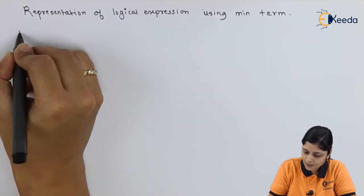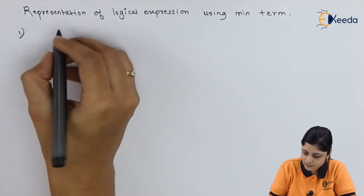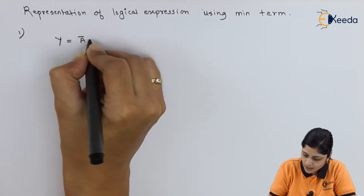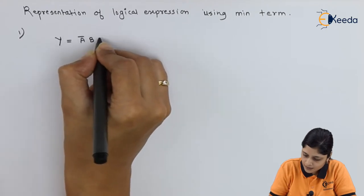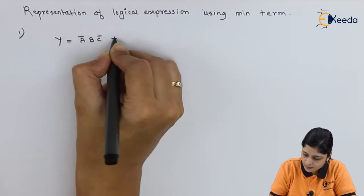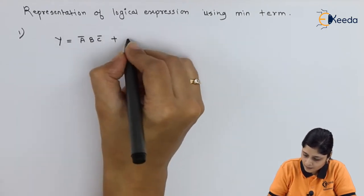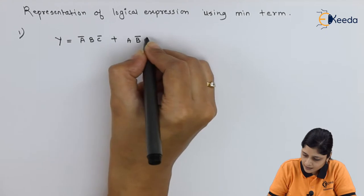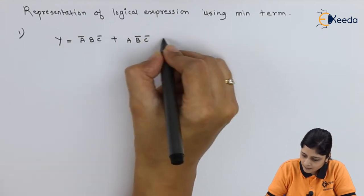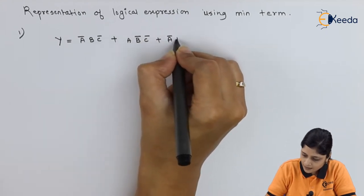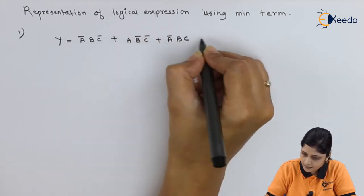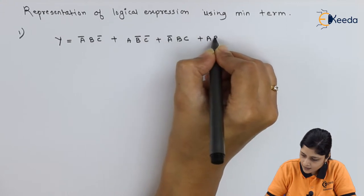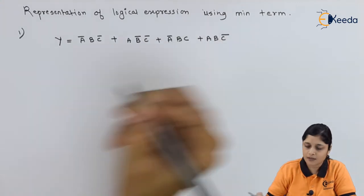For the first example, we will take y equals to ā·b·c̄ plus a·b̄·c̄ plus a·b·c̄.